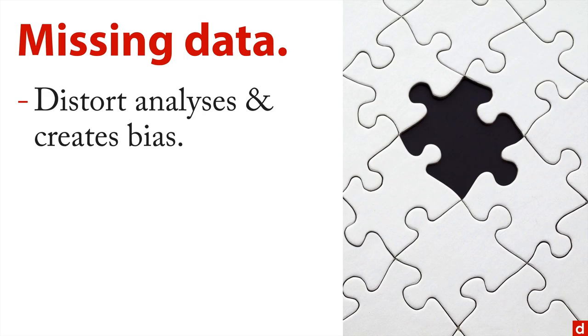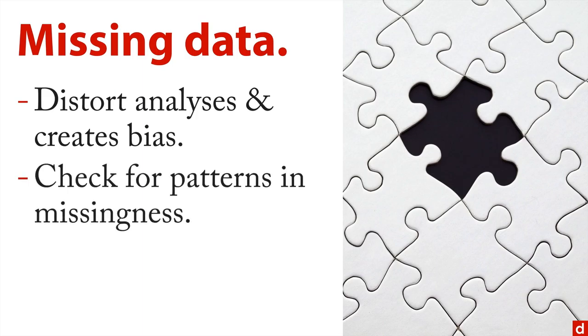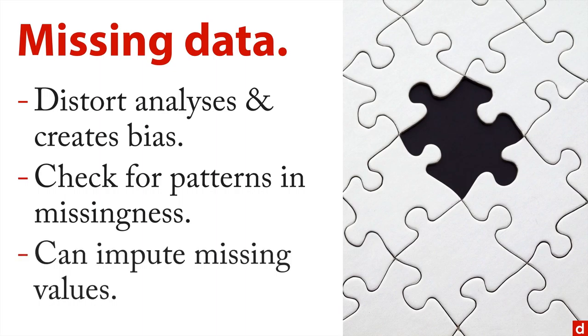Finally, there's the problem of missing data, and this is a big problem. Missing data tends to distort analyses and it creates biases if it's a particular group that's missing. When you're dealing with this, what you have to do is actually check for patterns and missingness. You create a new variable that indicates whether a value is missing, and then you see if that's associated with any of your other variables.